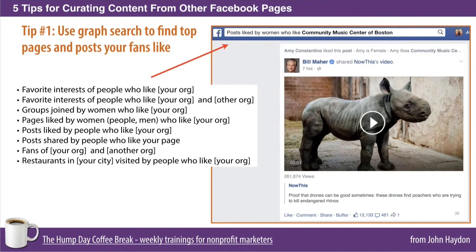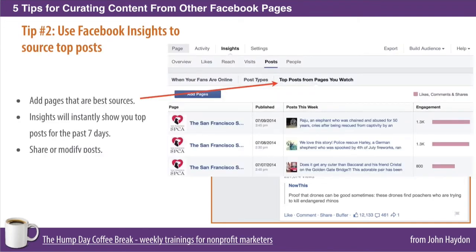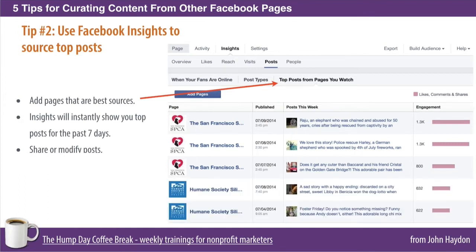The other thing you want to do is use Facebook Insights. Once you do your Graph Search, you're going to find the most popular pages among your fan base. Now you want to filter that and look at pages that are very similar to yours — in other words, the content they're publishing is similar to your page. If you're an animal shelter, it might be another animal shelter or maybe a local pet store that has really great how-to articles, and a lot of your fans like that page. Once you find those pages, you can add them to Facebook Insights.